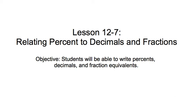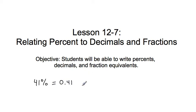Today's lesson is on relating percent to decimals and to fractions, exploring the relationship between the three. Our objective is for you to be able to write percents, decimals, and their fraction equivalents. By the end of the lesson, if I say what is the decimal equivalent of 41 percent, you would say 0.41. And then the fraction equivalent of that is 41 over 100.